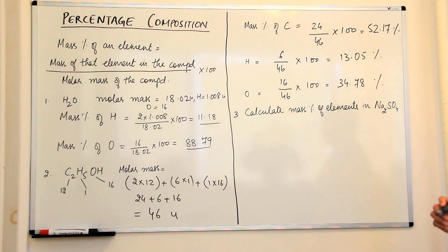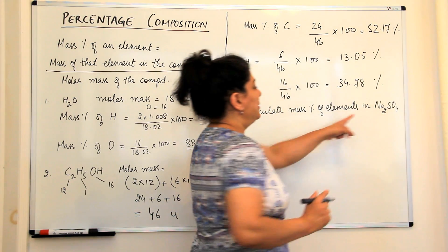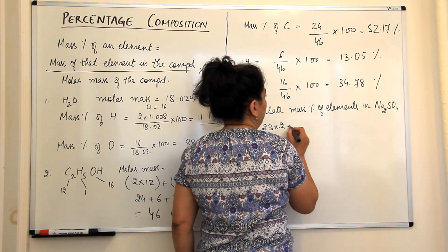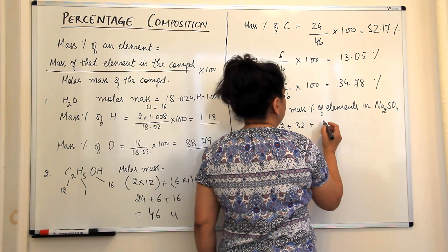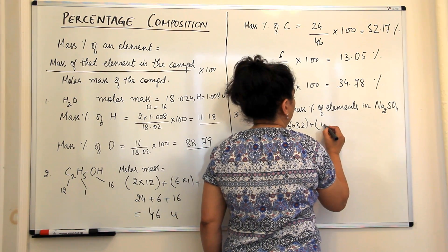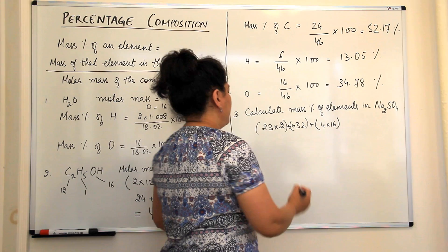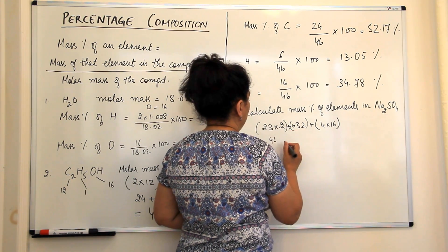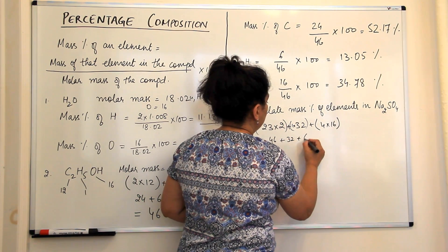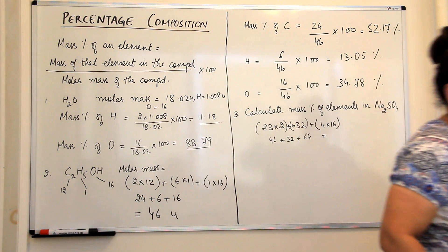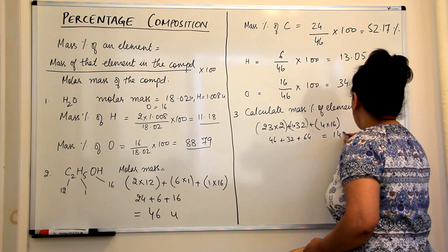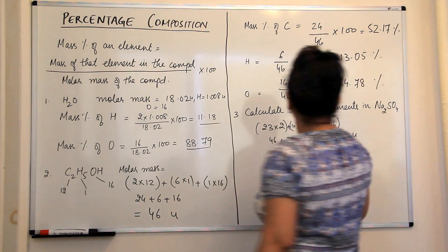Our next example is sodium sulfate, Na₂SO₄. Sodium has a mass of 23, so 2 × 23 = 46; sulfur is 32; and oxygen is 16 × 4 = 64. The molar mass of sodium sulfate is 46 + 32 + 64 = 142 u.